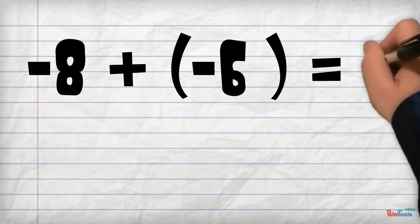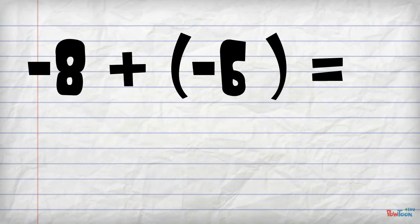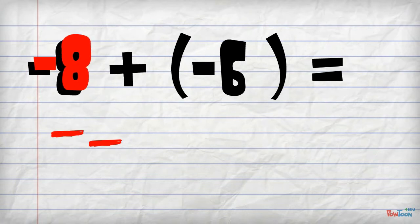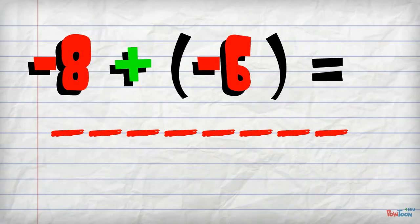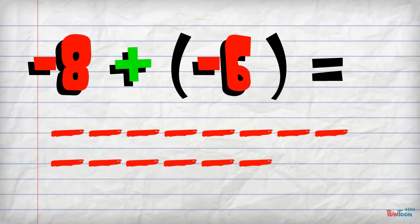How about this problem? Negative 8 plus negative 6. This time we are starting with negative 8, or 8 negative tiles. We then add on negative 6, or 6 negative tiles.